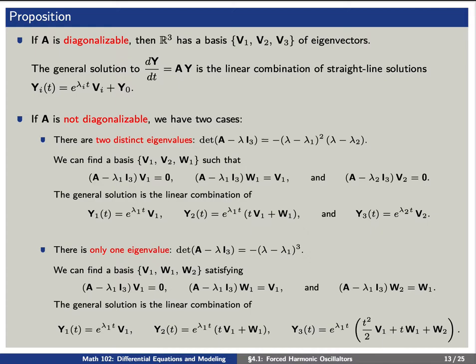First, if there are two distinct eigenvalues, then the characteristic polynomial essentially factors as (lambda minus lambda1)^2 times (lambda minus lambda2). Then we can find the basis V1, V2, and W1 such that V1 is an eigenvector associated to lambda1, W1 is a generalized eigenvector associated to V1, and V2 is an eigenvector associated to lambda2. In this case, we can express the general solution as a linear combination of y1 and y3 as straight-line solutions.